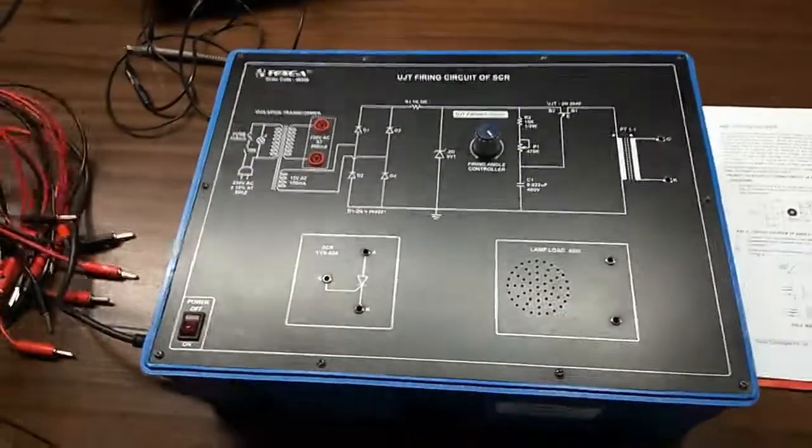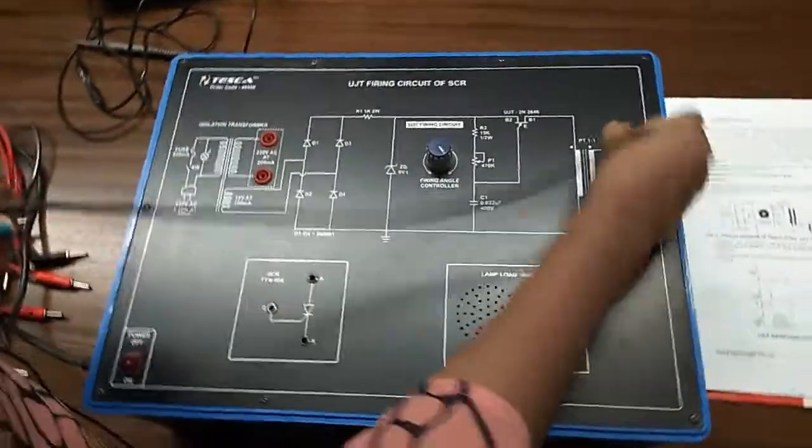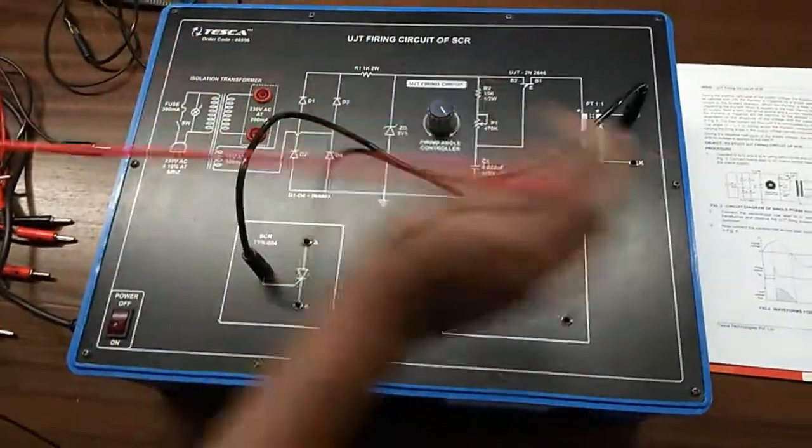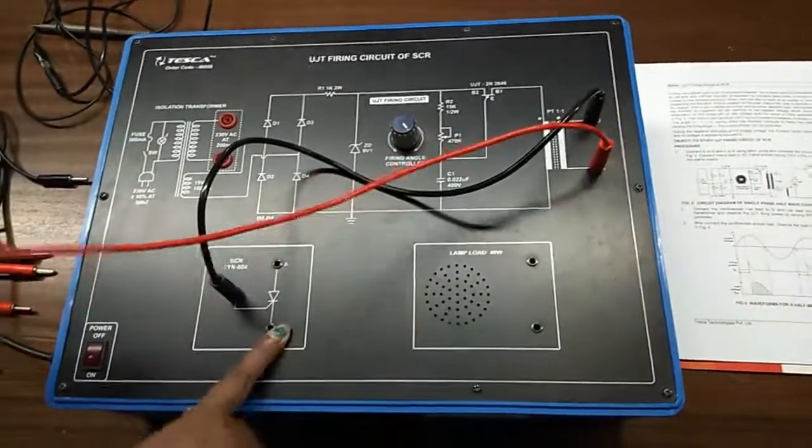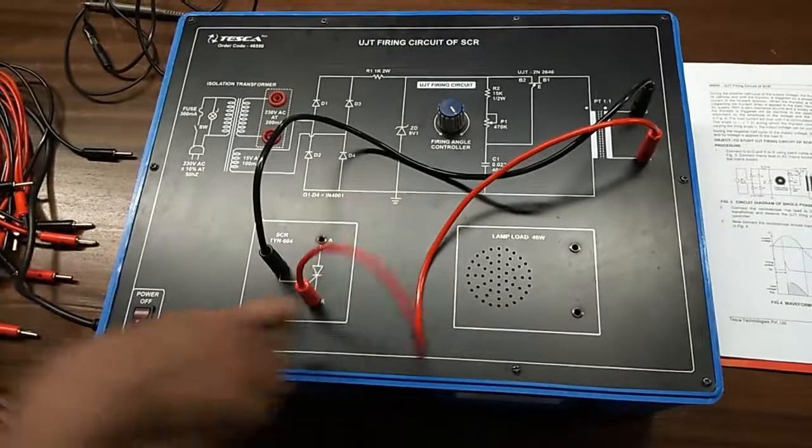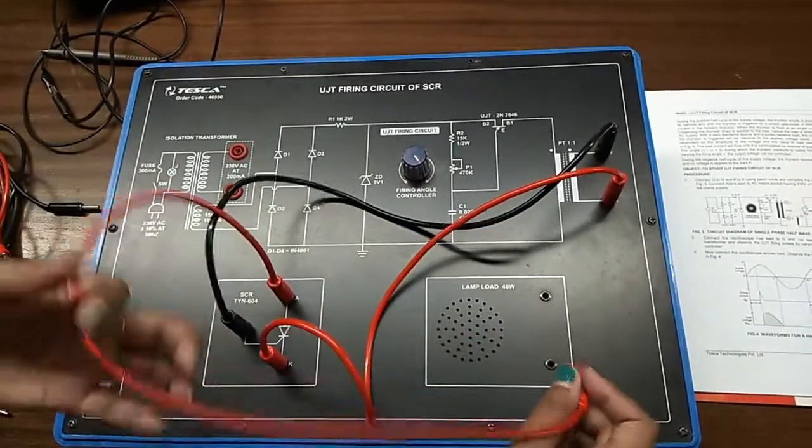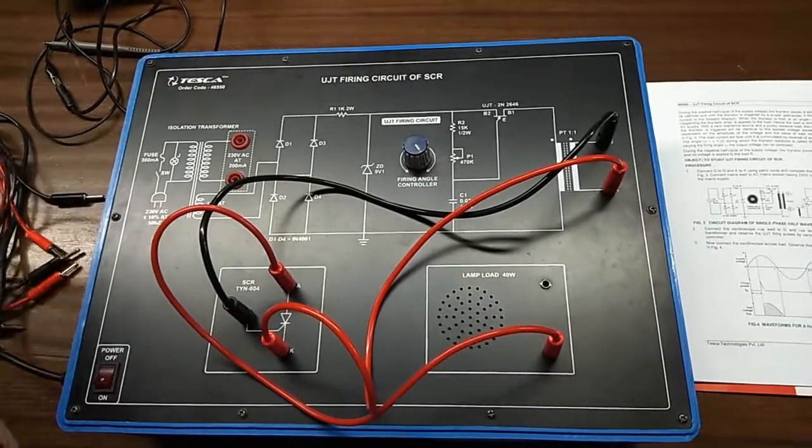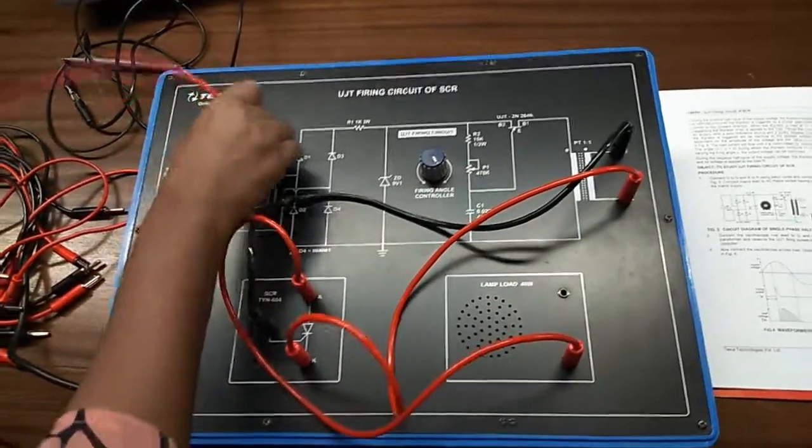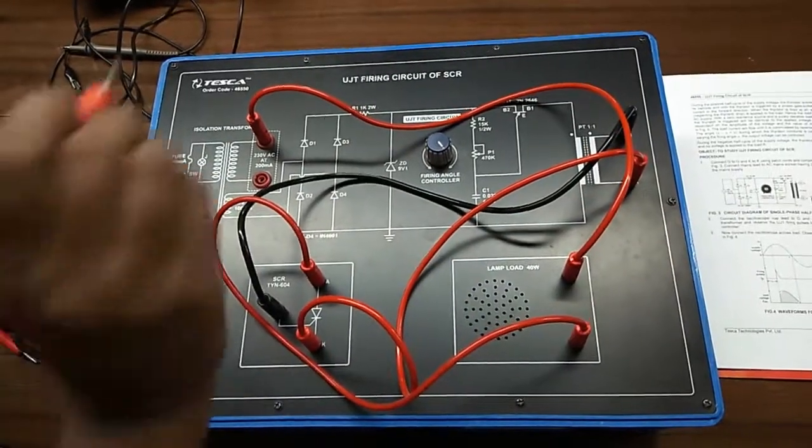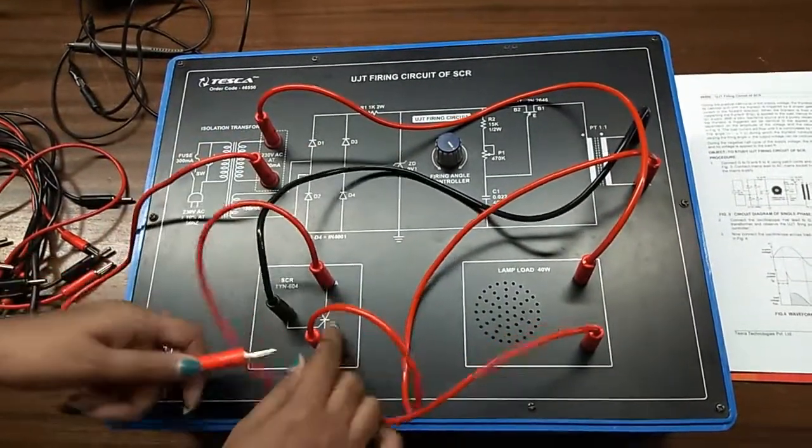First, connect G to the gate of SCR and K to the cathode of SCR. Now, connect the anode here and connect the power supply here, and connect this terminal with the cathode of SCR.